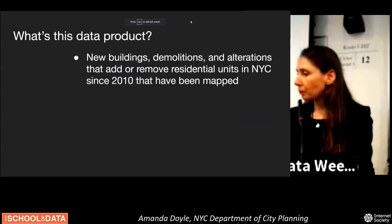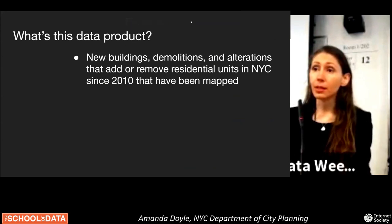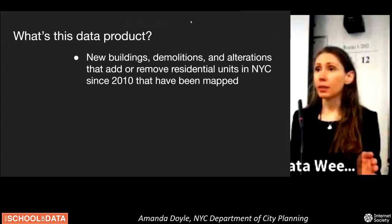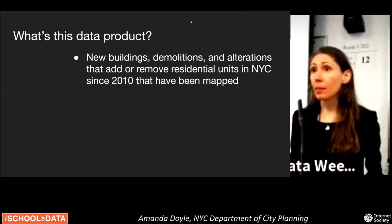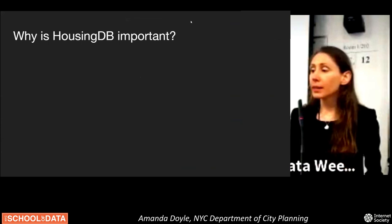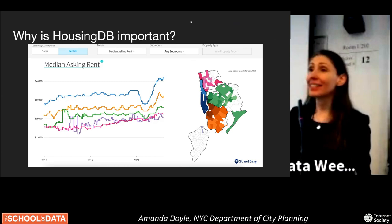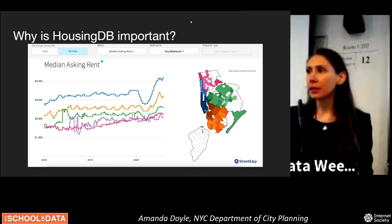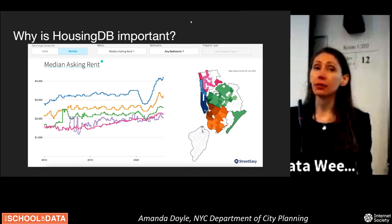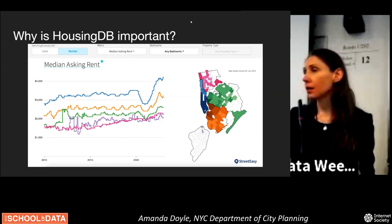The Housing Database tracks new buildings, demolitions, and alterations that add or remove residential units since 2010. That change-over-time view is really important — how has housing production changed year by year or month by month? Why is it important? The rent is too damn high. This data product is really important for our planners to understand how housing has changed over the years and where it is changing, to then inform policy to increase housing production where it's needed — and that is everywhere.